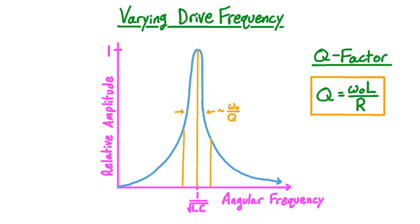This provides a good way to determine Q: just by looking at the graph we can determine the width of the peak and the resonant frequency. Furthermore, if we know any three of the quantities in our formula, we can use it to find the fourth. Now that we've learned about the resonant frequency and the Q factor, let's work through some examples.